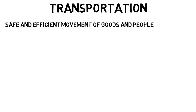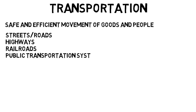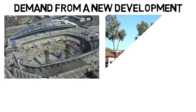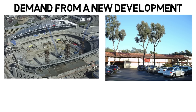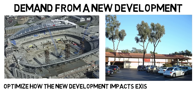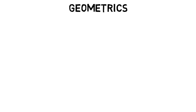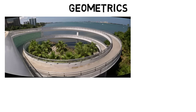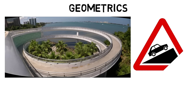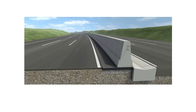Transportation engineering is about the safe and efficient movement of goods and people. These are the engineers who design streets, roads, highways, railroads, public transportation systems, and even airports. This engineer might look at the kind of demand from a new development — whether it's a new stadium or a new grocery store — as this will cause new types of traffic throughout the area. They would look at data from similar places to see what kind of traffic they get, then try to make improvements. It could be as simple as adding a bus stop, all the way to expanding the roadway. They could also work on the geometrics of the roadway, such as what radius of curvature an off-ramp needs to be for a car going 55 miles per hour so the tires won't slip, or what cross sections of a freeway need to be to accommodate expected traffic.